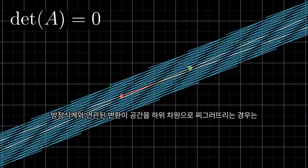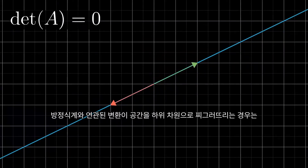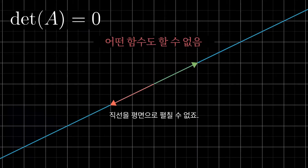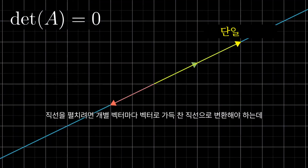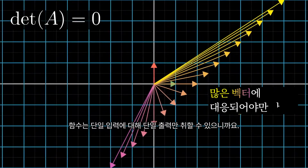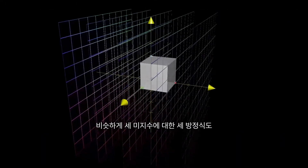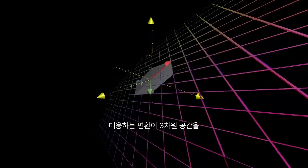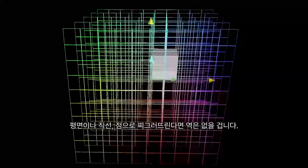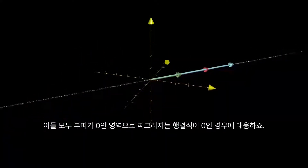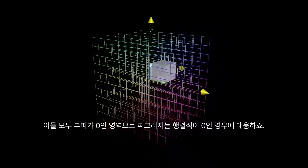But when the determinant is zero, and the transformation associated with the system of equations squishes space into a smaller dimension, there is no inverse. You cannot unsquish a line to turn it into a plane — at least, that's not something that a function can do. That would require transforming each individual vector into a whole line full of vectors, but functions can only take a single input to a single output. Similarly, for three equations and three unknowns, there will be no inverse if the corresponding transformation squishes 3D space onto a plane, or even if it squishes it onto a line or a point. Those all correspond to a determinant of zero, since any region is squished into something with zero volume.